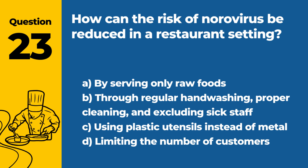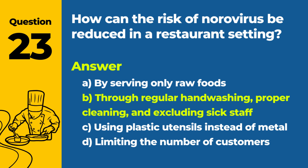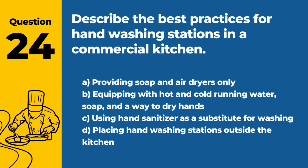Question 23: How can the risk of norovirus be reduced in a restaurant setting? a. By serving only raw foods. b. Through regular hand washing, proper cleaning, and excluding sick staff. c. Using plastic utensils instead of metal. d. Limiting the number of customers. Answer: b. Reducing the risk of norovirus involves maintaining high hygiene standards, including regular hand washing, proper cleaning and disinfection of surfaces, and excluding staff who are sick, especially those showing gastrointestinal symptoms.